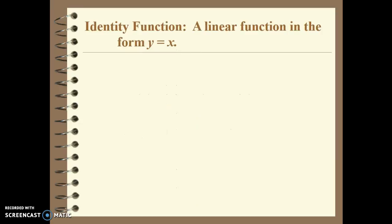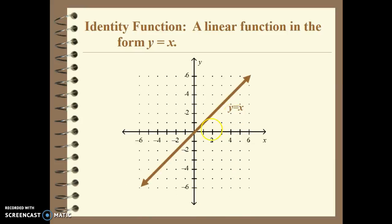The identity function is a linear function in the form of y equals x. So no matter what x is, it's going to equal y. If x equals 1, then y equals 1; if x equals 2, y equals 2. You can also look at this as a slope of 1 with a y-intercept of 0 — you can see it intercepts the y-axis at 0. That's the identity function.